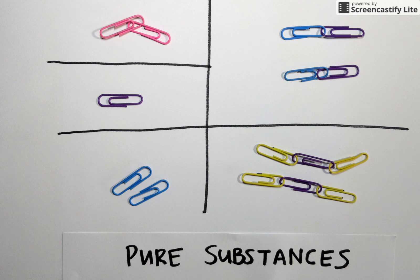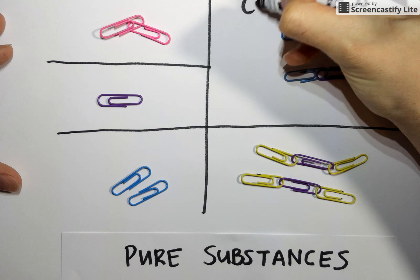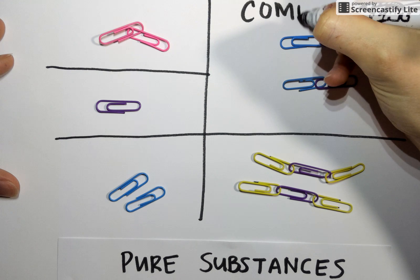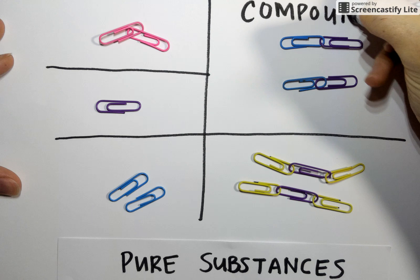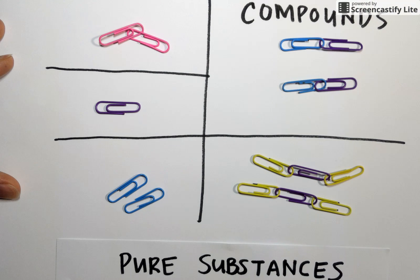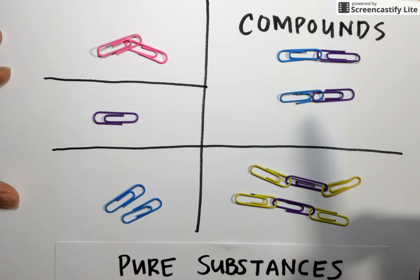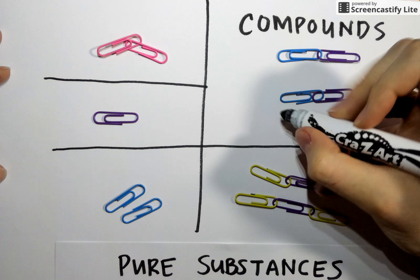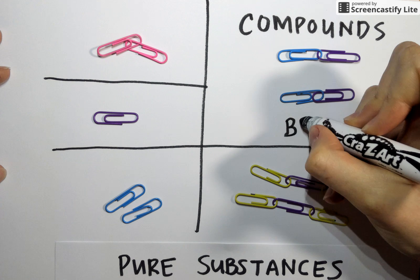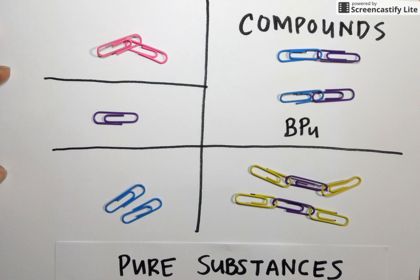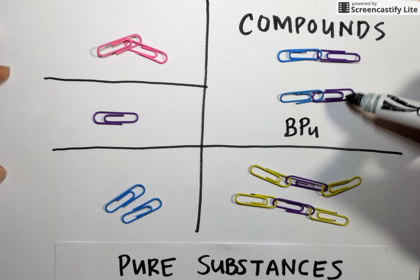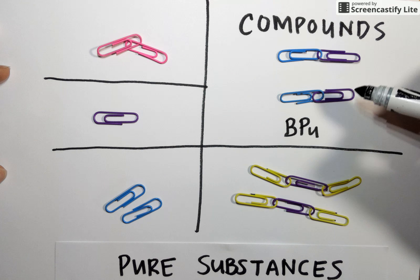We have terms to distinguish between these two types of pure substances. Over on the right-hand side of your screen, we have examples of compounds. Compounds are characterized by being made of more than one type of atom. So in this case, we have BPU. Each particle is going to be named using this formula, BPU.